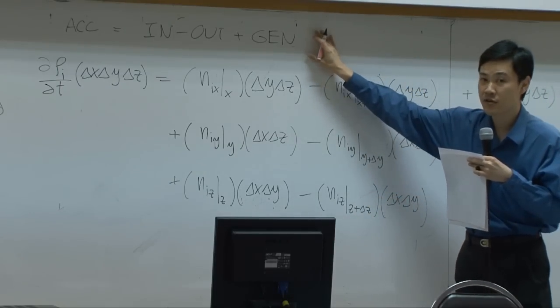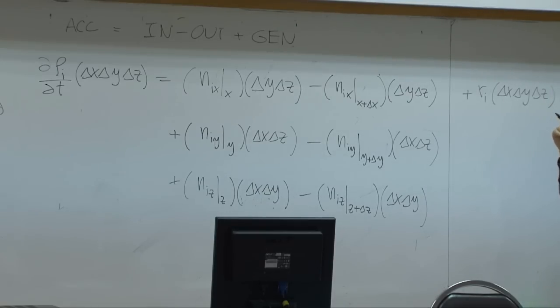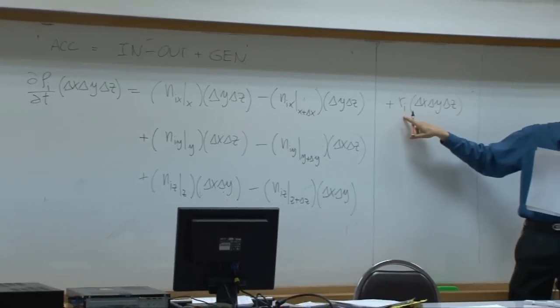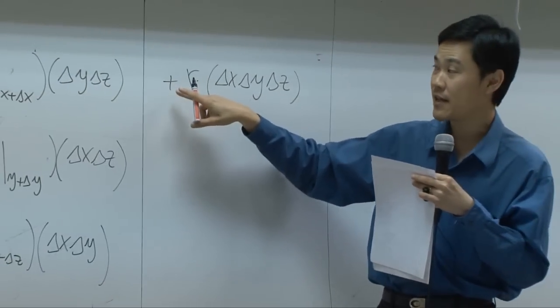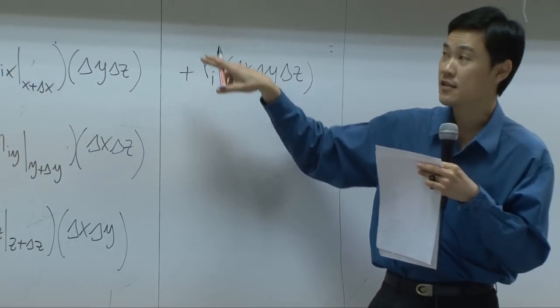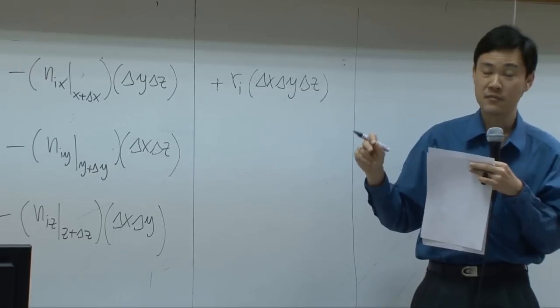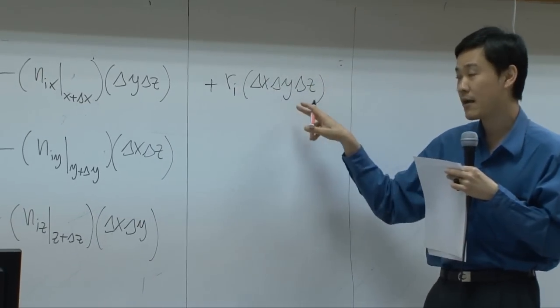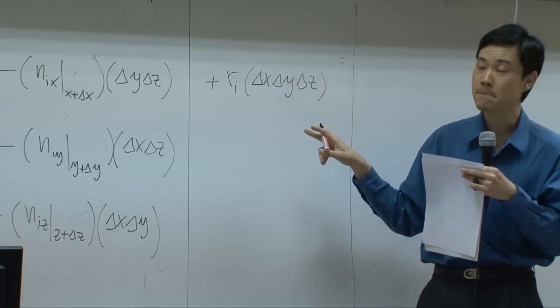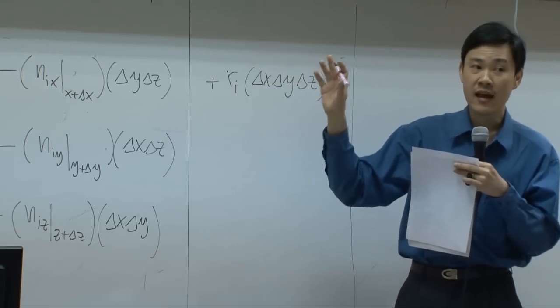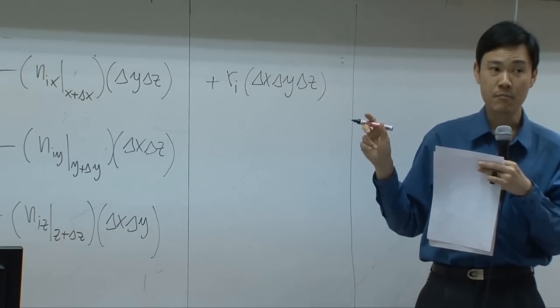Then you have generation term, which is the production of your species by reaction. The species can be produced using chemical reaction. Rate of chemical reaction is represented by r_i. r_i here is a rate of reaction generation, and I use positive term here to say that this is production rate, this is generation. r_i is mostly represented by the kinetic rate, which gives you production rate per unit volume per time. So therefore this one is supposed to be multiplied by the volume of the shell itself. Once you get this kind of equation, every term in this equation is supposed to have unit of mass per time.